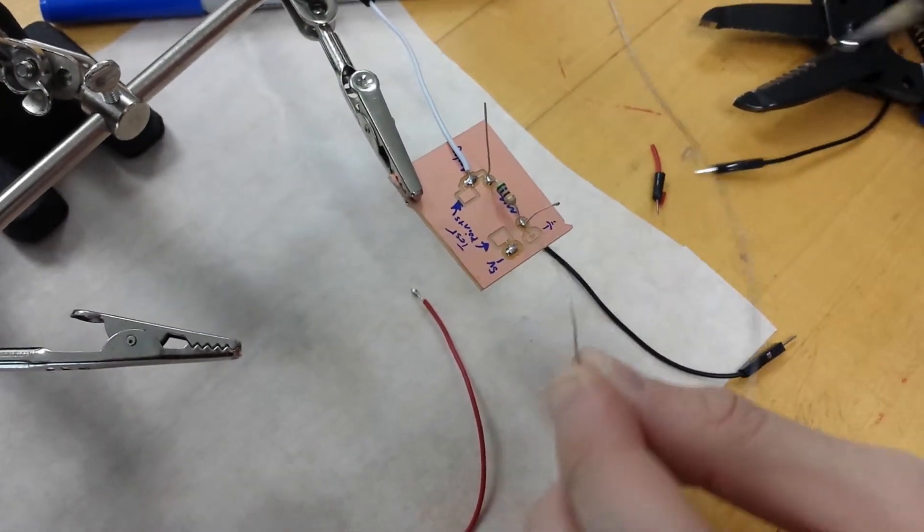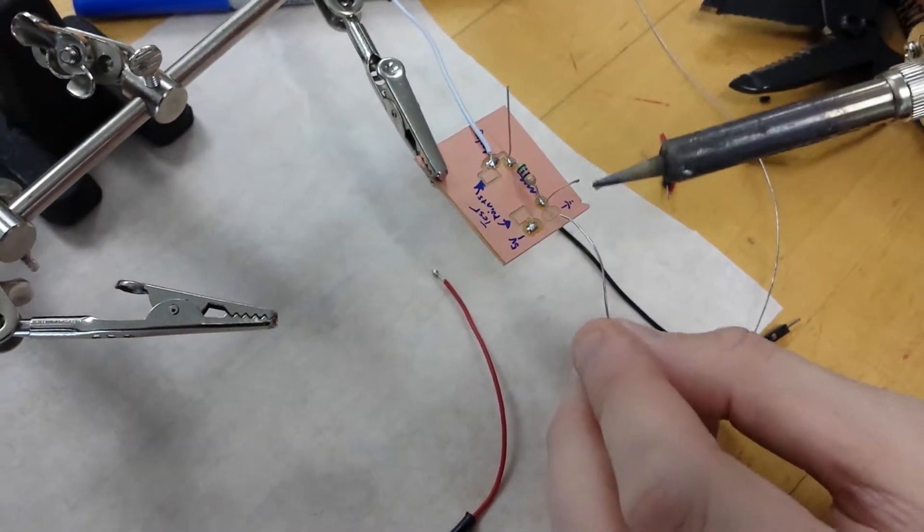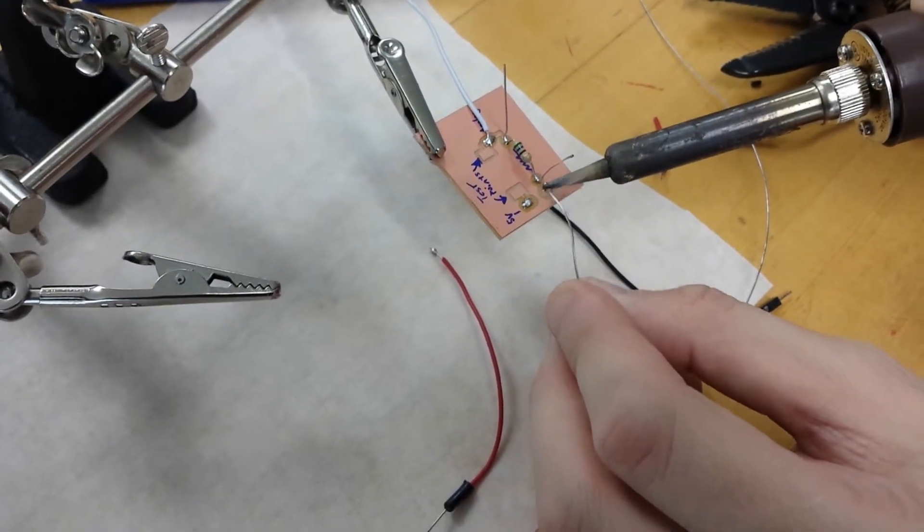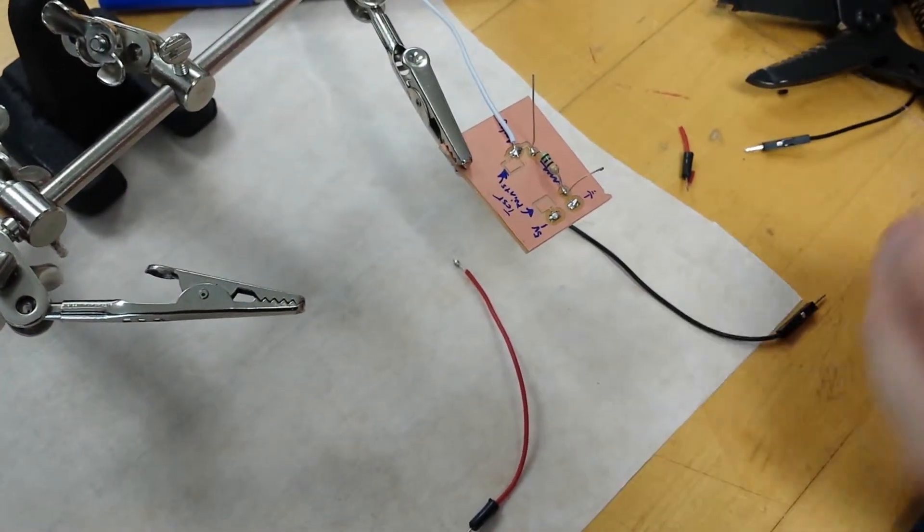I'm going to apply a little bit of solder to my 5 volt pad. Try not to directly breathe in the fumes. They're not great for you. I'm going to also apply just a tiny amount of solder to the grounding pad, just a little bubble.